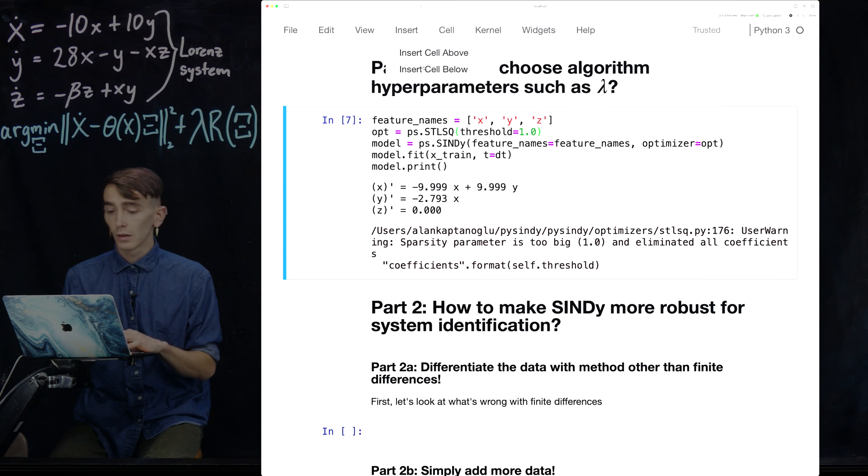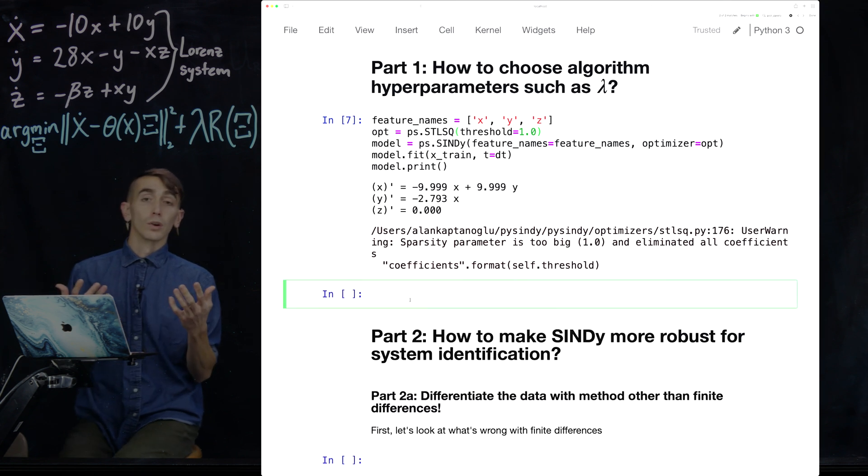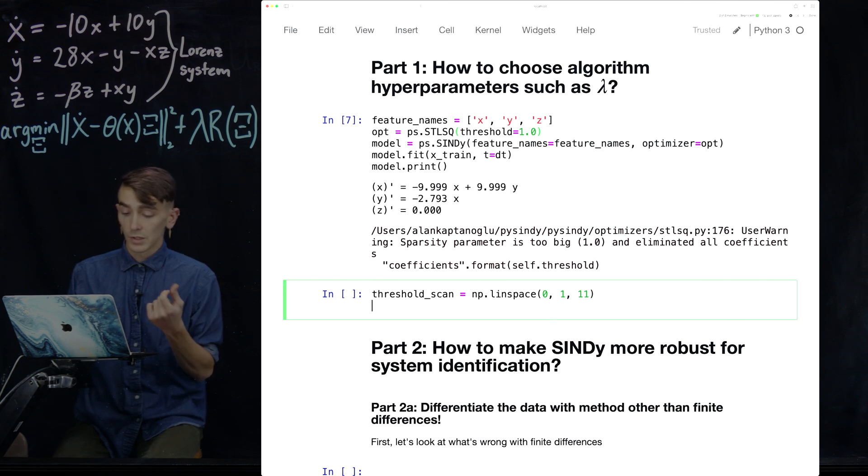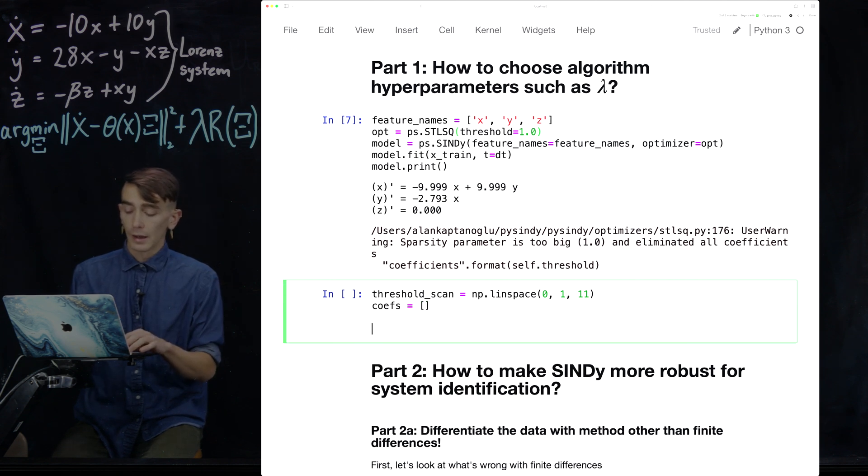So what you typically would want to do, start a new cell here, is make what's called a Pareto curve and basically scan through different values of lambda and see how your model does as you change that parameter. And you can generate a whole curve like this, which is really nice. So we're going to just define some different values of these thresholds from 0 to 1, going by steps of 0.1. We're going to just record the model coefficients for each of those thresholds, and then we're going to plot them at the end. So I just need to do some coding work here.